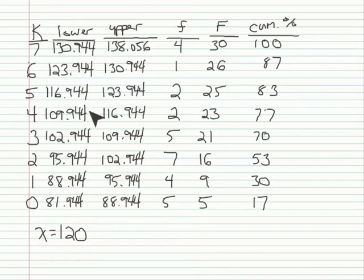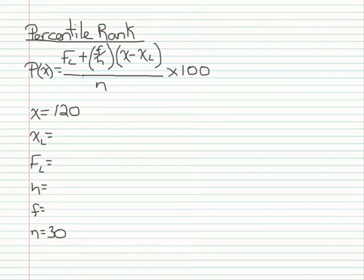It's not here, but here — in the sixth interval, a score of 120 would fall in this interval. And I need the lower limit of that interval, which is 116.944. So x sub l is going to be 116.944.